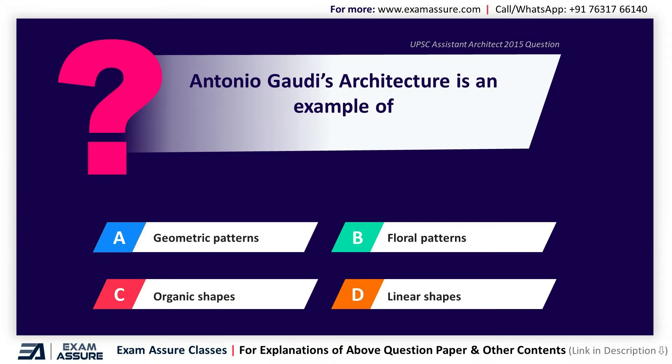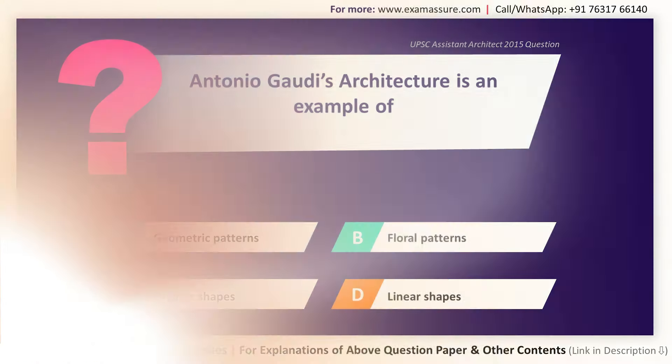Next question. Antoni Gaudí's architecture is an example of — Option A: Geometric patterns, Option B: Floral patterns, Option C: Organic shapes, Option D: Linear shapes. The correct answer is Option C, Organic shapes.